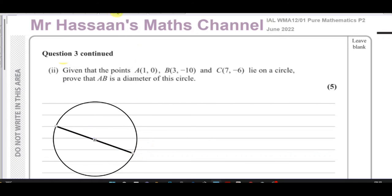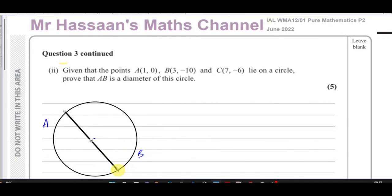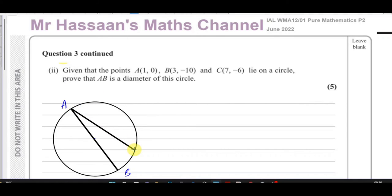Let's say that's A, that's B — I'm not doing it 100% accurately but in roughly the right place. And C is (7, -6). So to make it more realistic, A would be here, B there, and C somewhere over here. We've got to prove that the angle at C is a right angle.